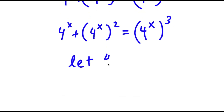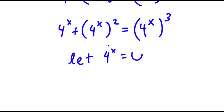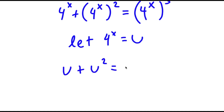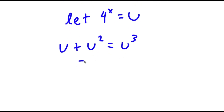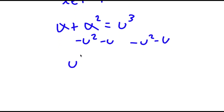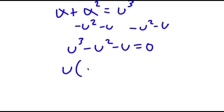I'm going to let 4 to the power of x equal the variable u. So now I have u plus u squared equals u to the power of 3. To solve this, I subtract u squared and u from both sides. These two cancel out and now I have u cubed minus u squared minus u equals 0.